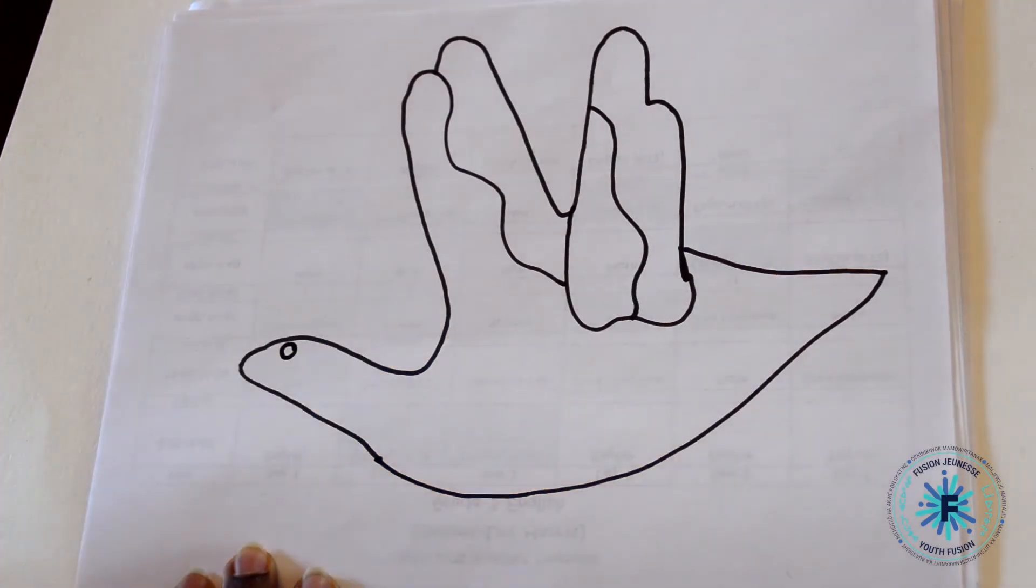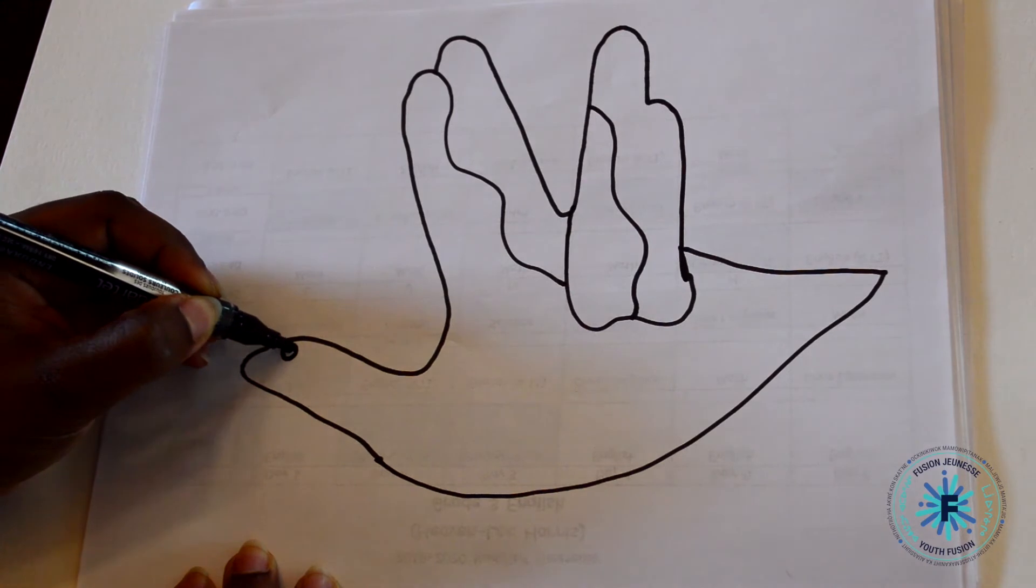To draw the eye, draw a circle close to the edge of the thumb, then shade the top half.